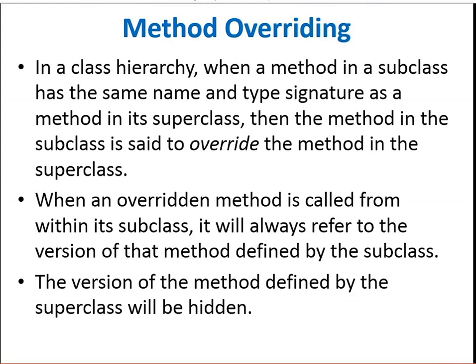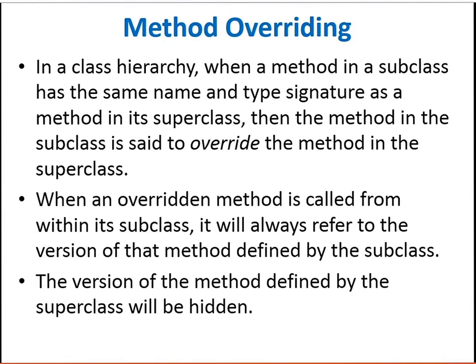When an overridden method is called from within the subclass, it will always refer to the version of that method defined by the subclass. The version of the method defined by the superclass will be hidden, or we can say overridden, by the subclass method.